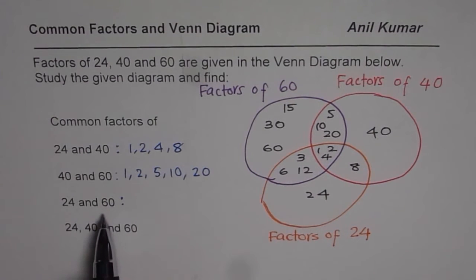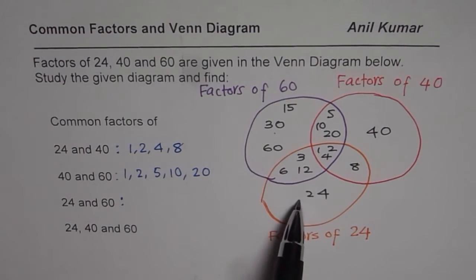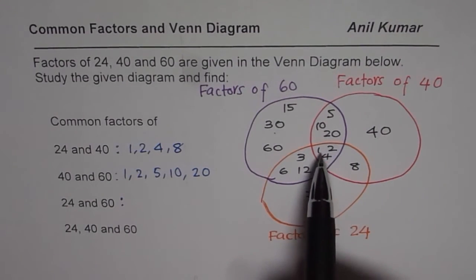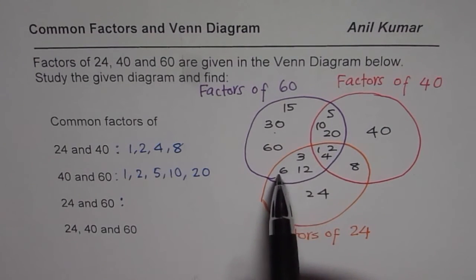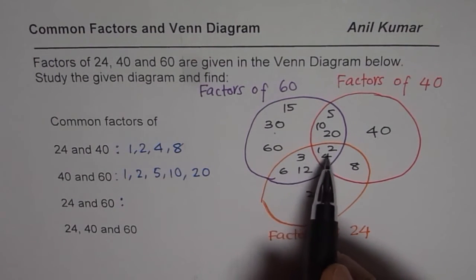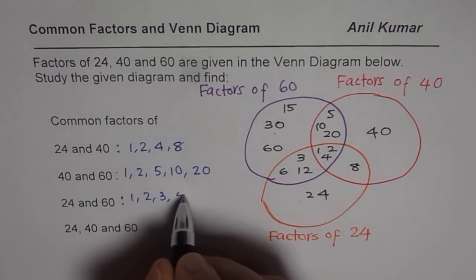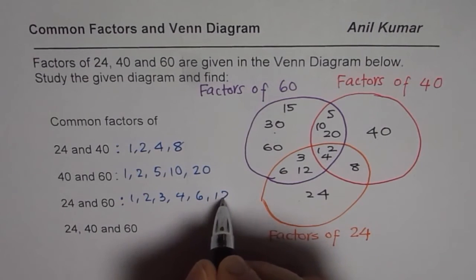How about 24 and 60? These two groups, and these are the common factors: 1, 2, 3, 4, 6, and 12. We can write them in order: 1, 2, 3, 4, 6, and 12.